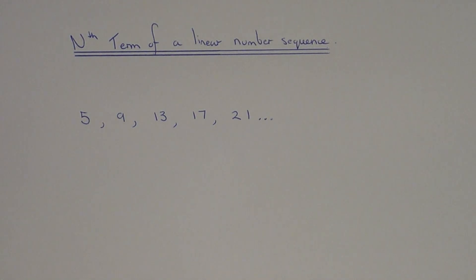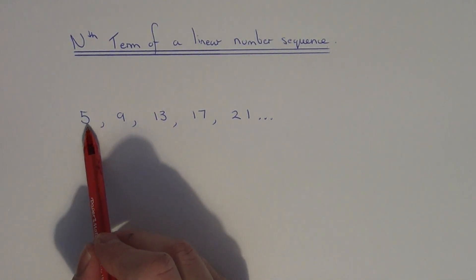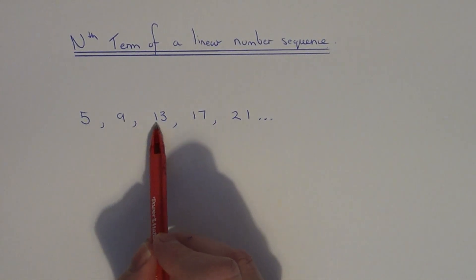Hi, today I'm going to show you how to work out the nth term of a linear number sequence. A linear number sequence is a sequence which goes up and down by the same amount each time.